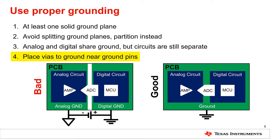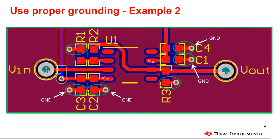Finally, make sure to place vias to connect ground planes with other ground pours and traces. If different points on the ground node become separated by a long path or are altogether disconnected, they can develop voltage differences — in other words, not every point labeled ground will actually be at zero volts, just as when the ground planes are split. Ground vias help to tie the ground node together and keep it at a consistent voltage on a multilayer board. For this reason, it is especially important to place a ground via close to every component pin or terminal that is connected to ground.